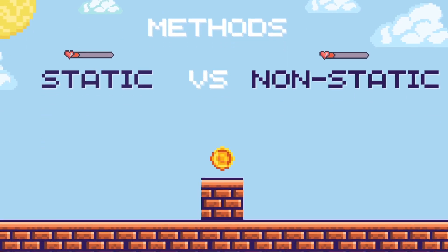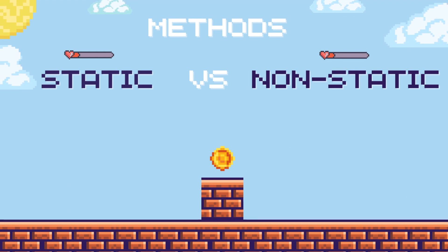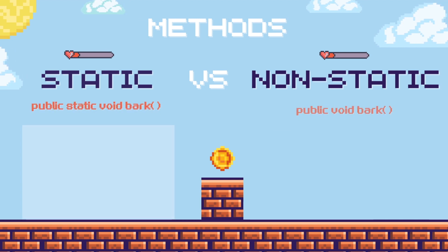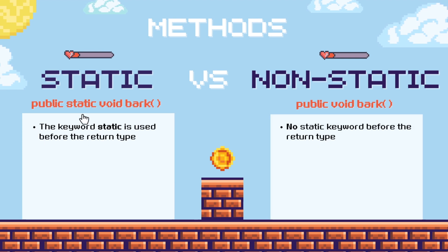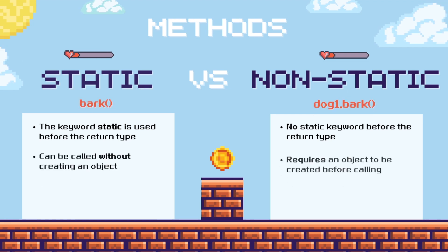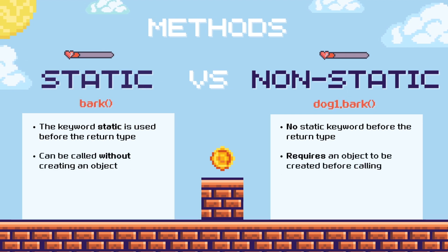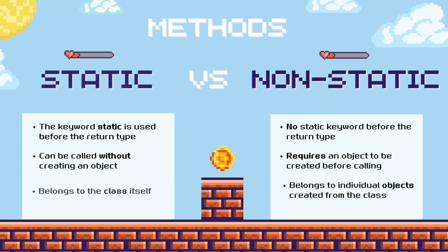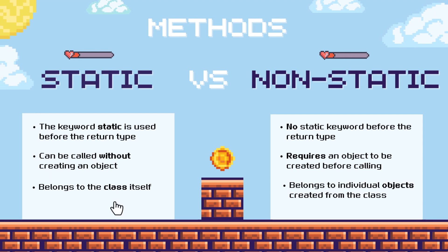We've been using the term non-static quite a bit, so let's take a second to understand what it means. To get a better understanding of non-static methods, let's compare them to the static methods we typically write in our main class. The static method has the static keyword, where non-static methods do not. Static methods are called without creating an object, whereas a non-static method requires an object to be created first because it belongs to individual objects created from a class. The main difference is that static methods belong to the main class itself, while non-static methods belong to the individual objects created from the class.